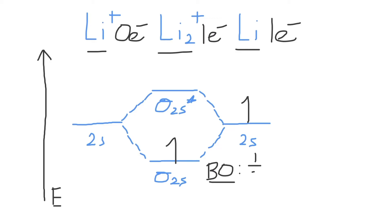So the bond order is equal to one half times the number of bonding electrons, which are present in the sigma 2s bonding molecular orbital, minus the number of antibonding electrons, which there's zero.